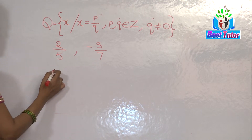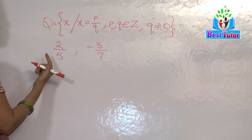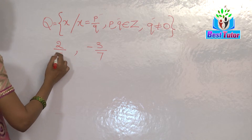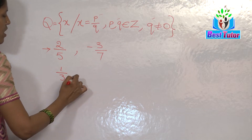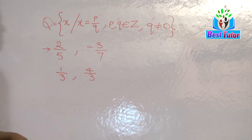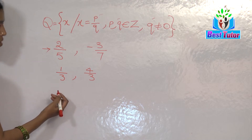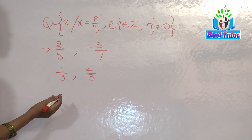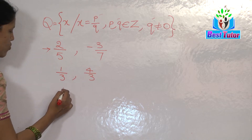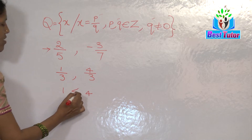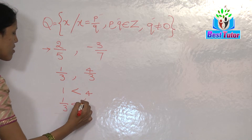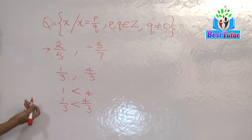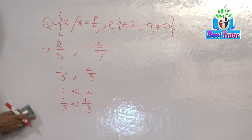There are two types of questions. This is an example where both rational numbers are unlike fractions — the denominators are different. Let us get to that example later. Let me give you a simpler example: one by three and four by three. These two are like fractions. When we compare two like fractions, the denominators are the same, so we ignore the denominators and consider only the numerators, one and four. Obviously one is less than four, so one by three is less than four by three. This is how we compare two like fractions.